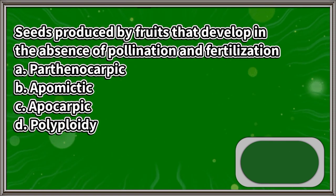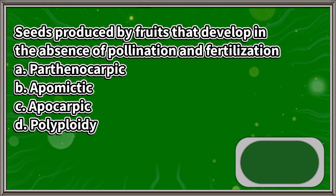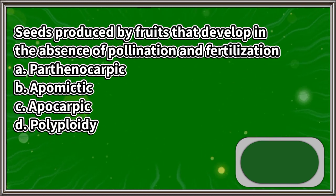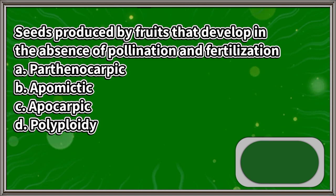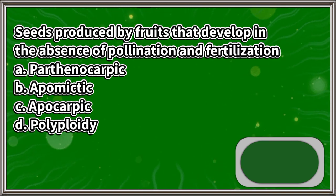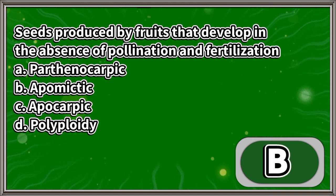Seeds produced by fruits that develop in the absence of pollination and fertilization: A. Parthenocarpic, B. Apomictic, C. Apocarpic, D. Polyploidy. The answer is letter B.